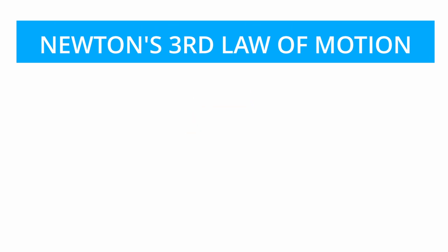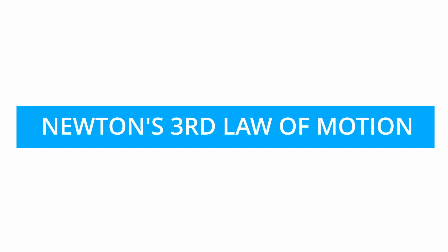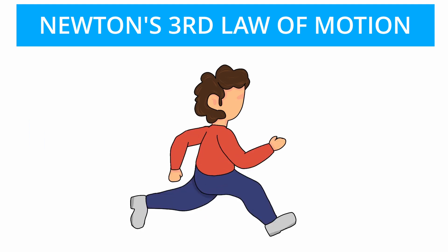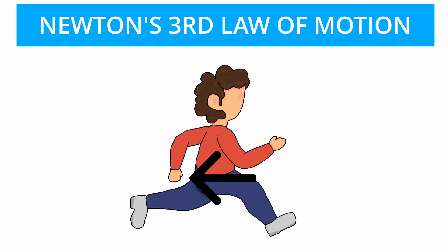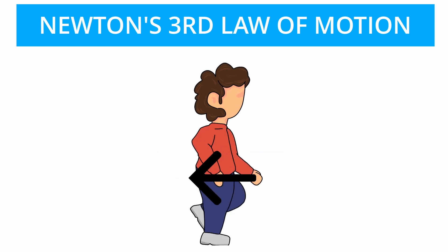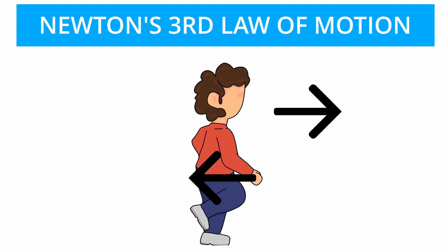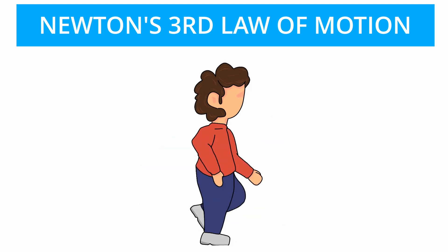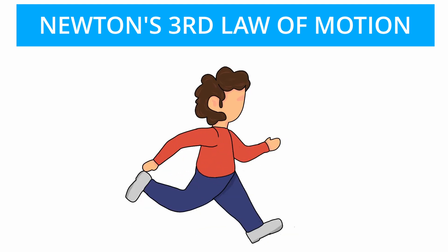Let us break this down using the third law of motion. The force being exerted here is that of the swimmer pushing the water backwards. The equal reaction to this would be an equal force applied on the swimmer by the water. The opposite reaction to backward is forward. Therefore, if you put this together, a force is exerted on the swimmer that pushes them forward.